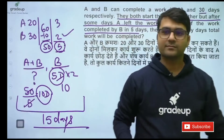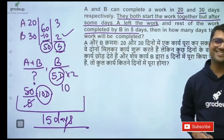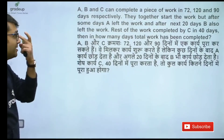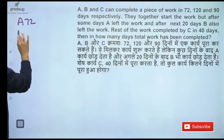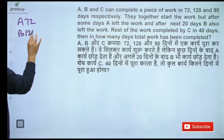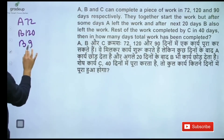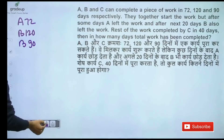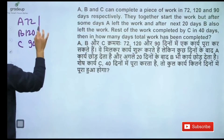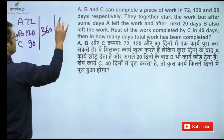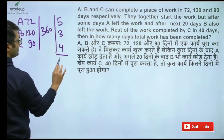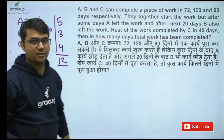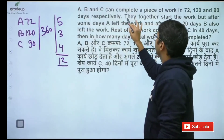Now listen carefully. A can do the work in 72 days, B in 120 days, C in 90 days. The LCM is 360. The unit efficiencies are: A = 5, B = 3, C = 4, total = 12. According to the question, they all start the work together.